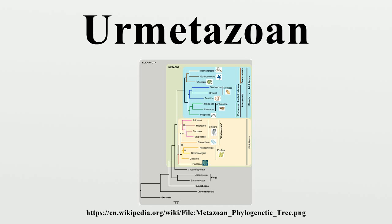As this cavity developed, it became deeper and deeper until the organism resembled a thimble, with an inside and outside. Some sponges and cnidaria have this kind of body form. The development of the bilateral body plan follows from this hypothesis; the urbilaterian would develop its symmetry as one end of the placula became adapted for moving forwards.